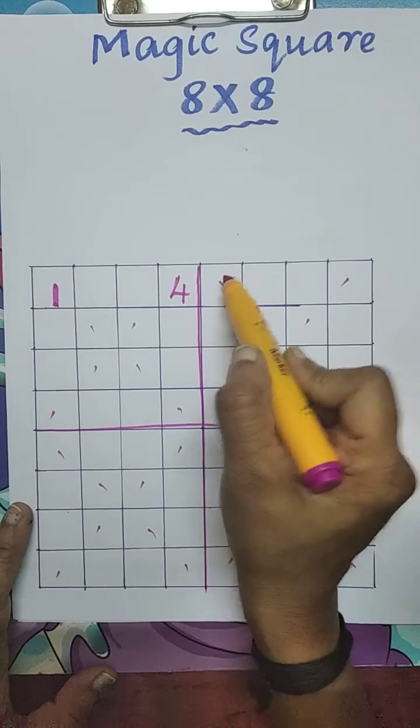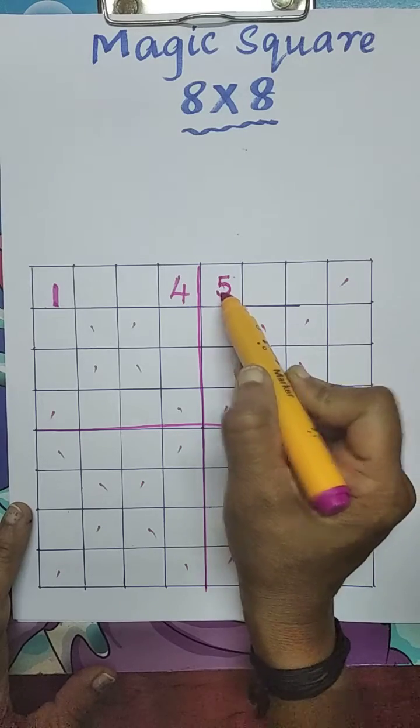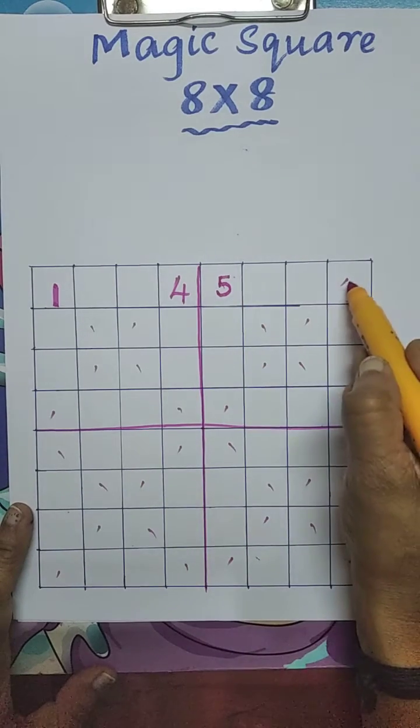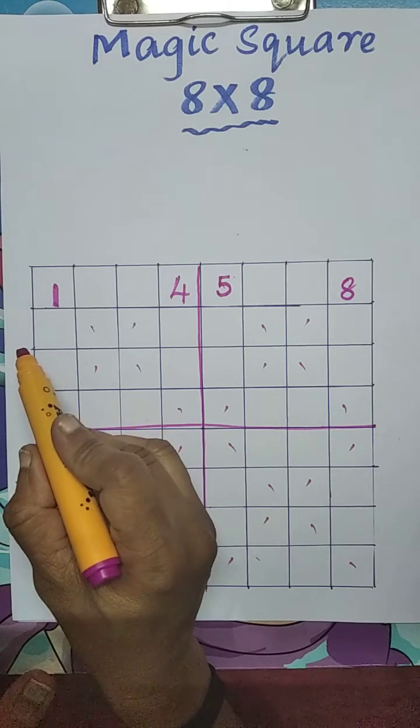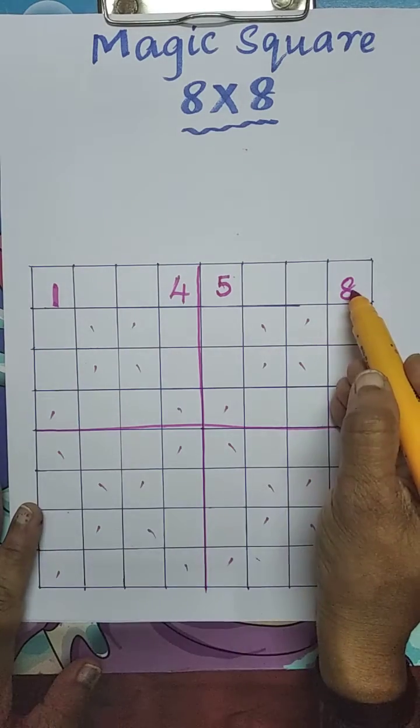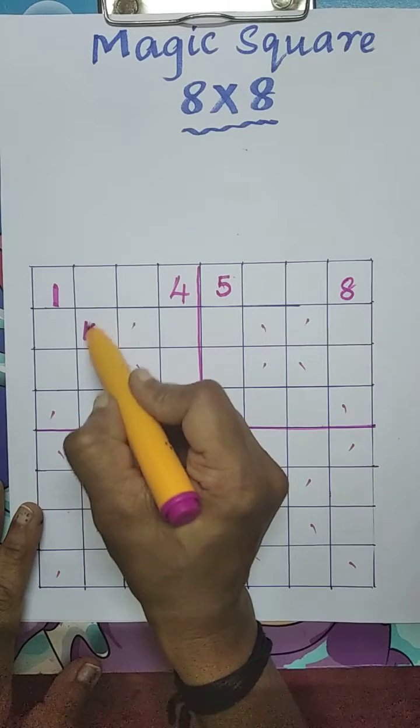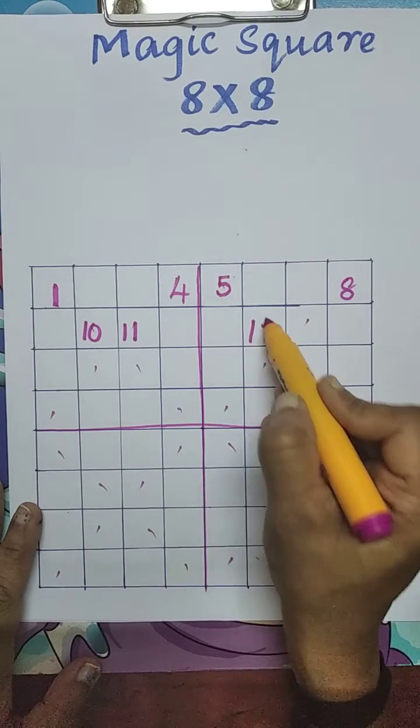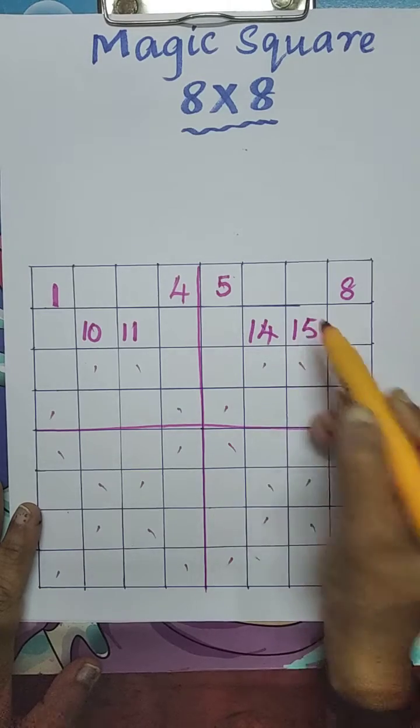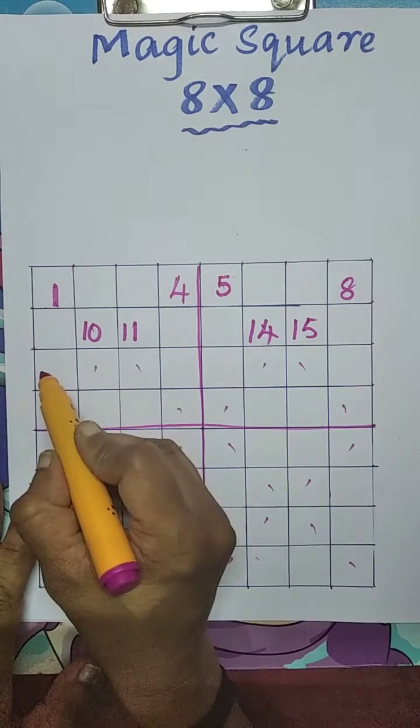After that continue to next box. That is 5, 6, 7, 8. Now again come back to 2nd line. Movement left to right. After 8, 9, 10, 11, 12, 13, 14, 15, 16, 17.